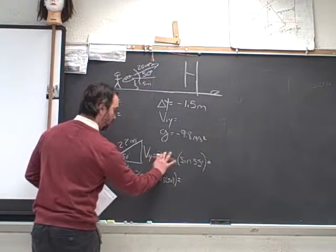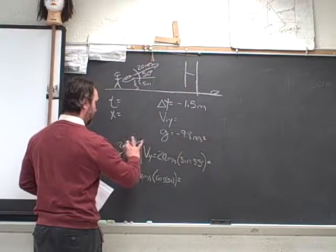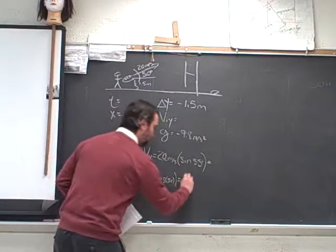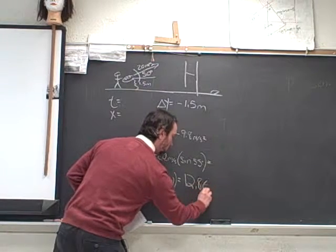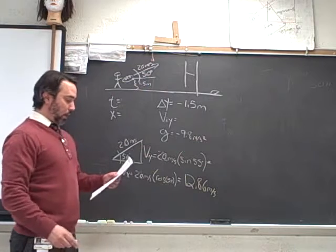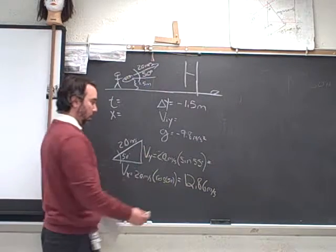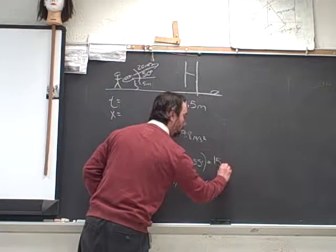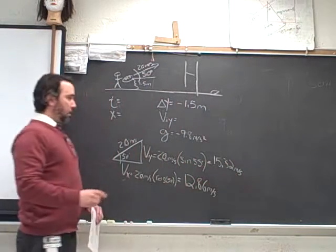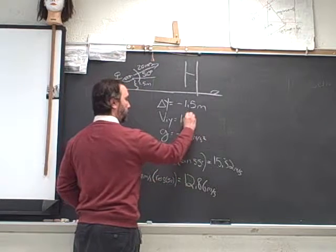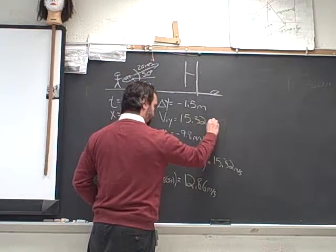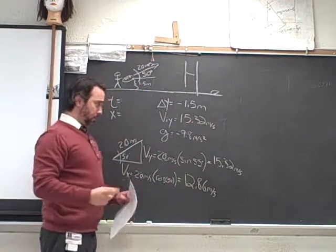20 meters per second is going to be a velocity in the x direction of 12.86 meters per second. And the initial velocity in the y direction before gravity begins to slow it is going to be 15.32 meters per second. So this is the initial velocity in the y direction that we'll use here. And it's going to be positive. It's moving in the upward direction.